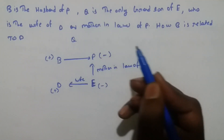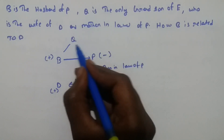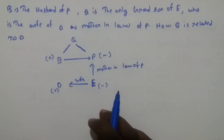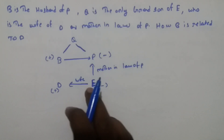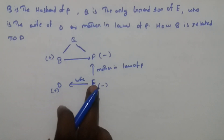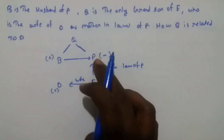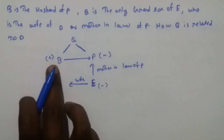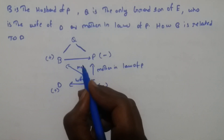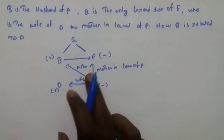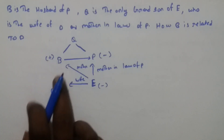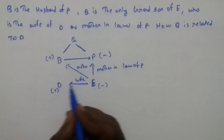Since Q is the only grandson of E, B and P are the parents of Q. Since E is the mother-in-law of P, E is automatically the mother of B. That means D becomes the father, as E is the wife of D.